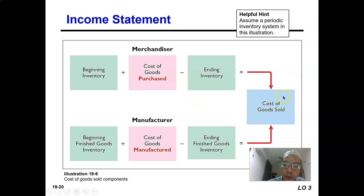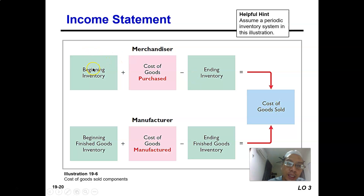In cost of goods sold for a merchandiser, how do they calculate cost of goods sold? Under the periodic inventory system, to calculate cost of goods sold for a merchandiser, they have the beginning inventory — the stock level at the beginning of the period. They add the cost of goods purchased, and then they minus the ending inventory, which gives the cost of goods sold.